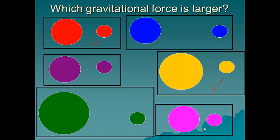Now in the pink one, the pink one's mass is much smaller, but they're much closer together. So again, for these, you don't really have enough information.